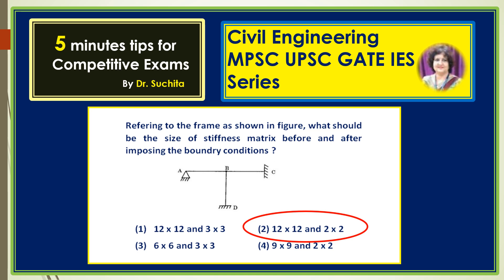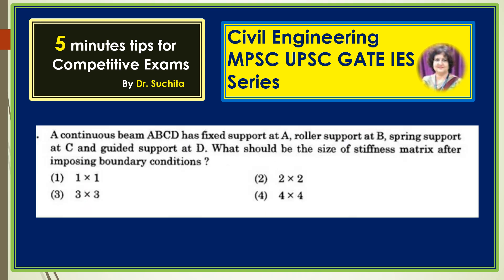Now let us understand how to decide the size of the stiffness matrix for a continuous beam. In this problem a continuous beam ABCD is given. It is fixed at support A, roller support at B, spring support at C and guided support at D. First of all we have to understand what the number of unknowns is at each support. At a fixed support the number of unknowns is zero because there is no displacement possible at the fixed end.